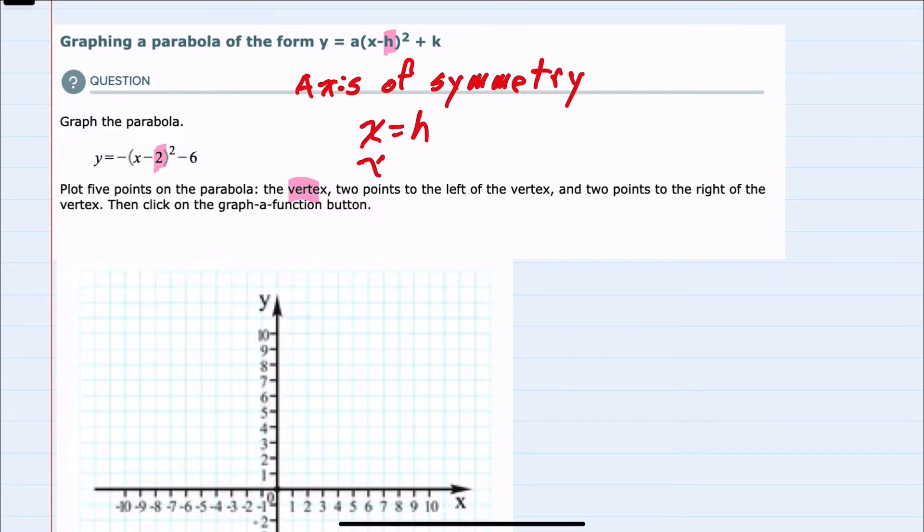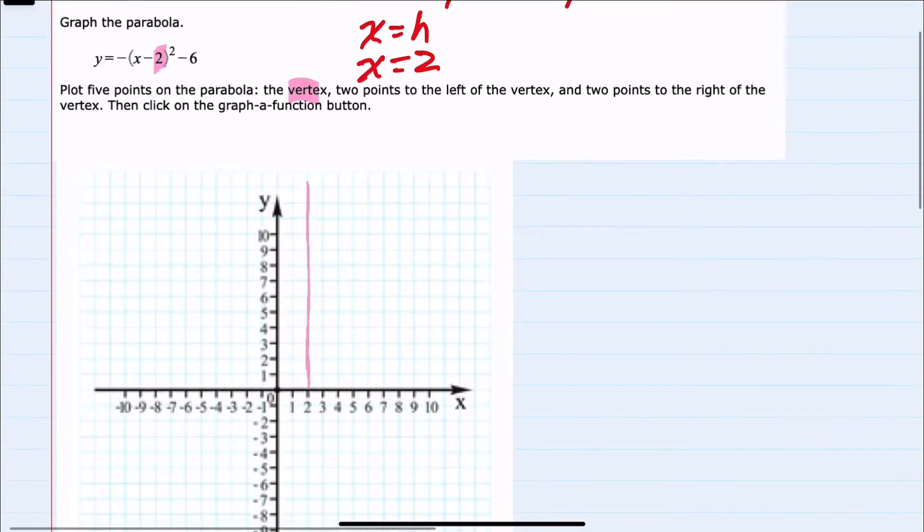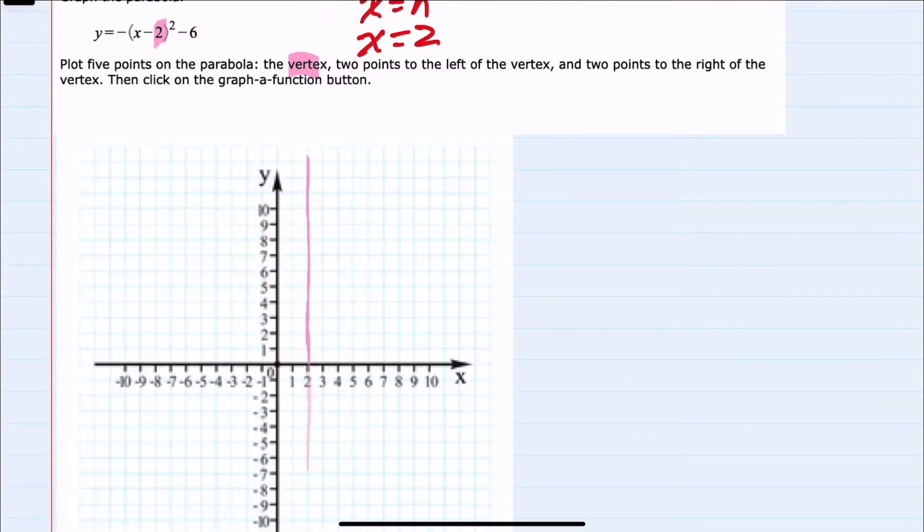So our axis of symmetry is x equals a positive two. So we've identified our axis of symmetry will be the vertical line through x equals two.